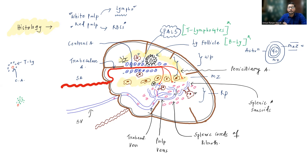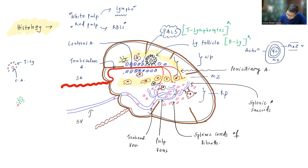This is the concept of closed and open circulation. Because of open circulation, you will find plenty of RBCs in the splenic cords of Billroth, giving a reddish appearance — that is why it is known as red pulp. Red pulp is made up of splenic sinusoids and the splenic cords of Billroth. In the cords, we find RBCs, macrophages, plasma cells, and reticular cells.